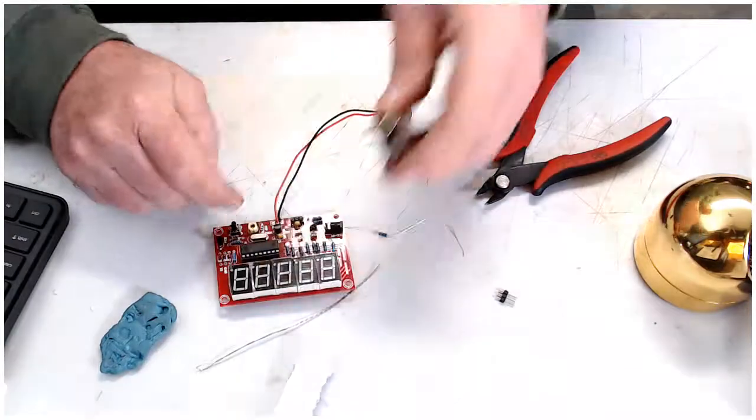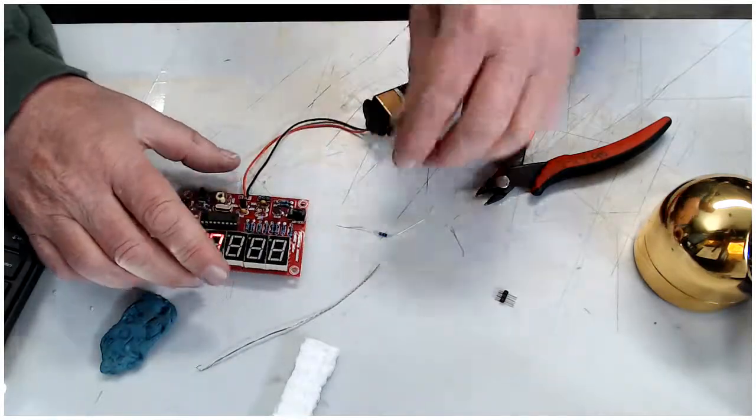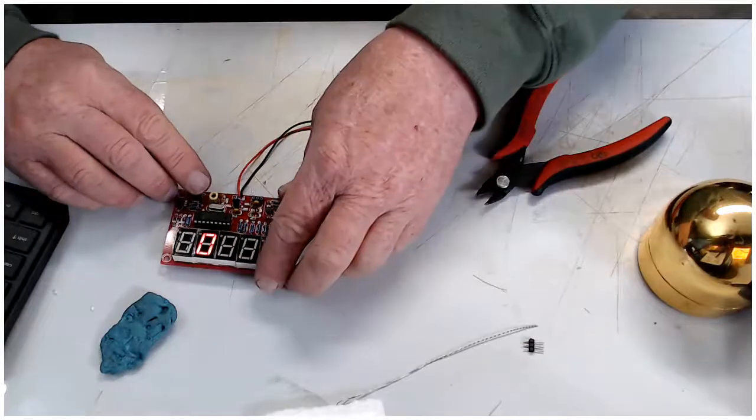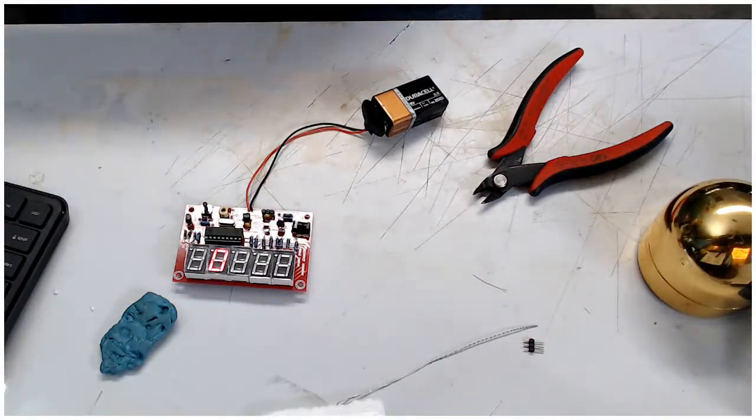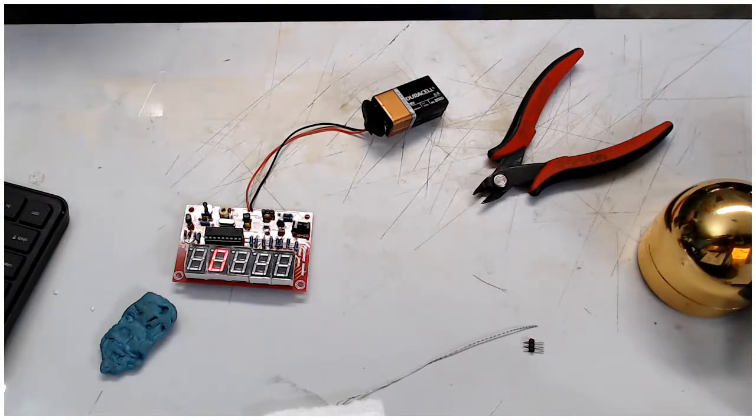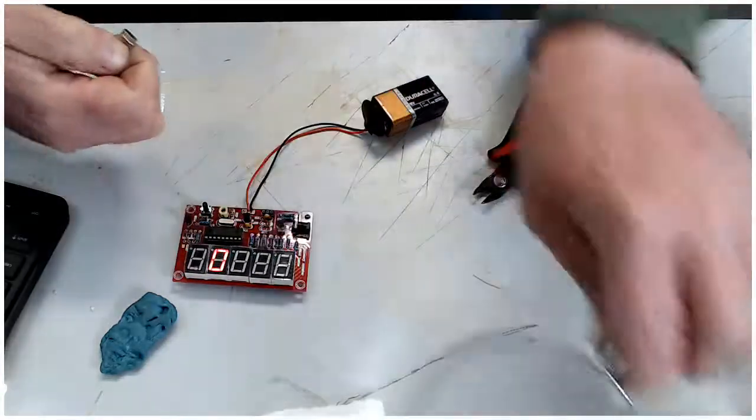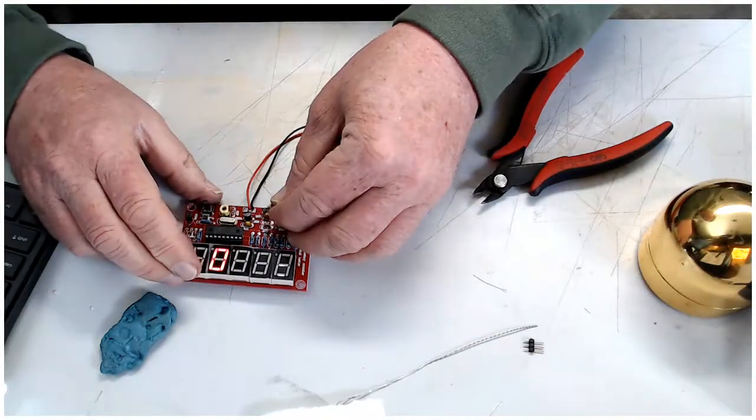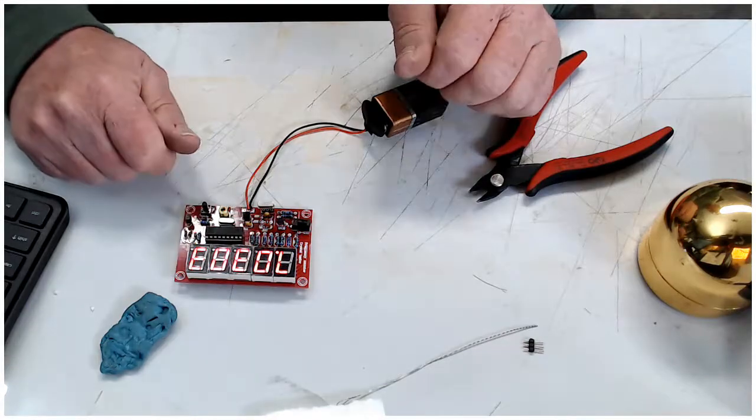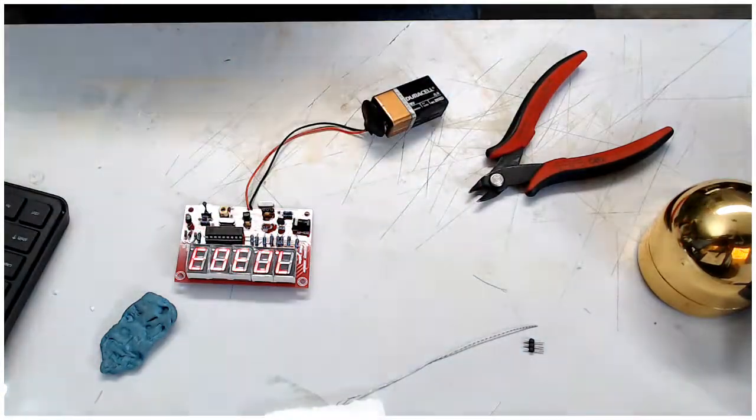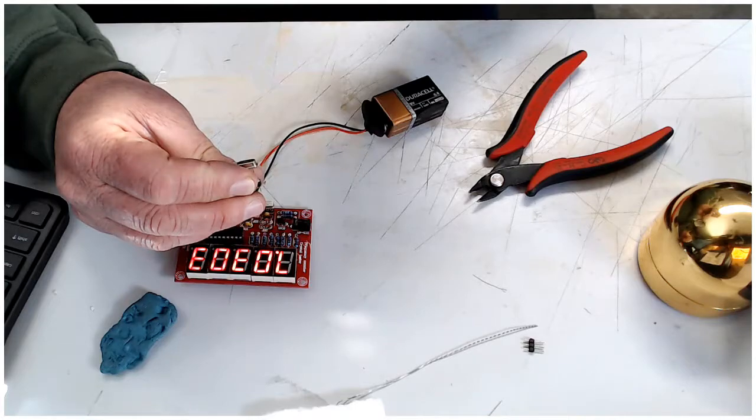So let's power it up and see what happens. All right, got one segment lit up there. Let's put a crystal on it and see what happens. Let's see what this is. 7.30. Look at that, 7.303. So it's off just a bit. Let's try another one. There's this one, this one is 7.035.